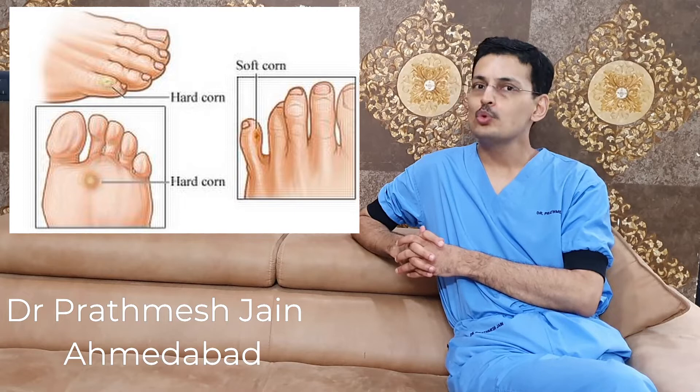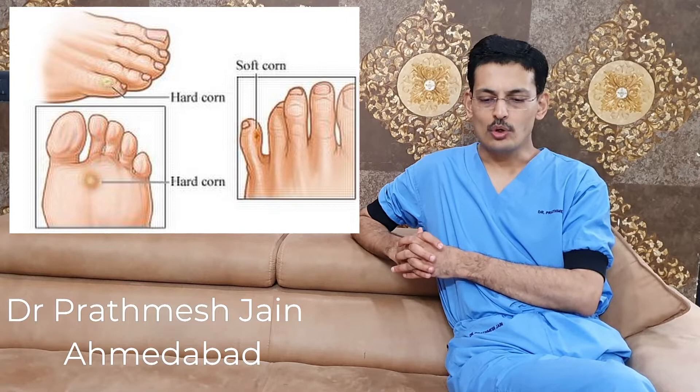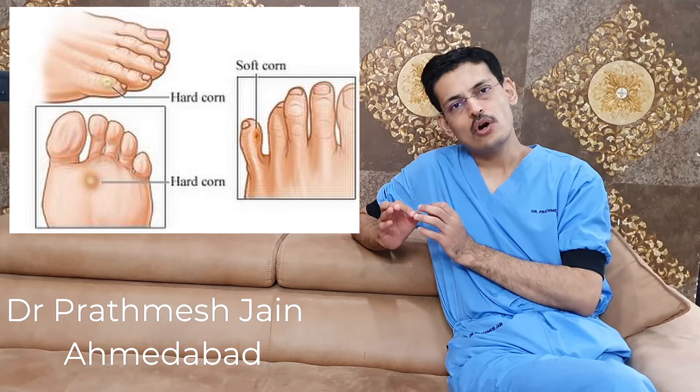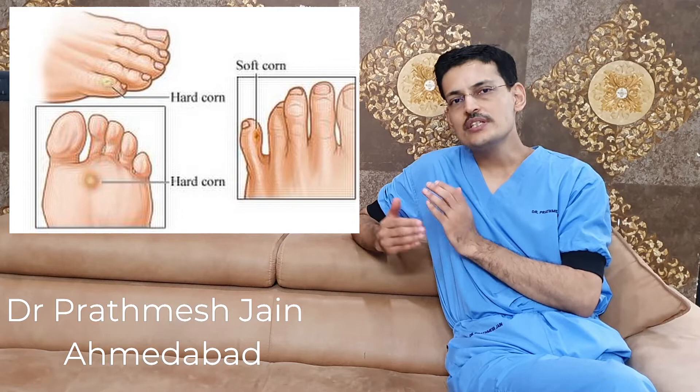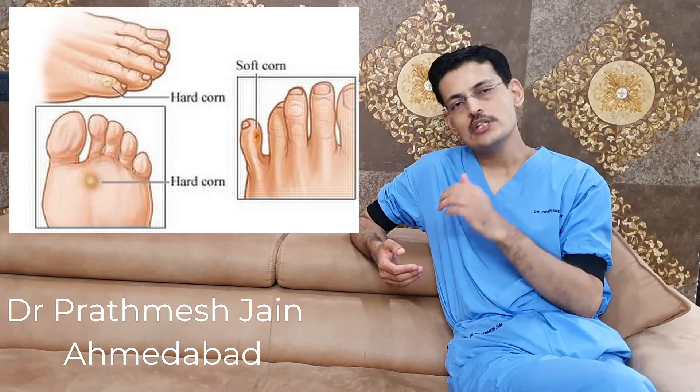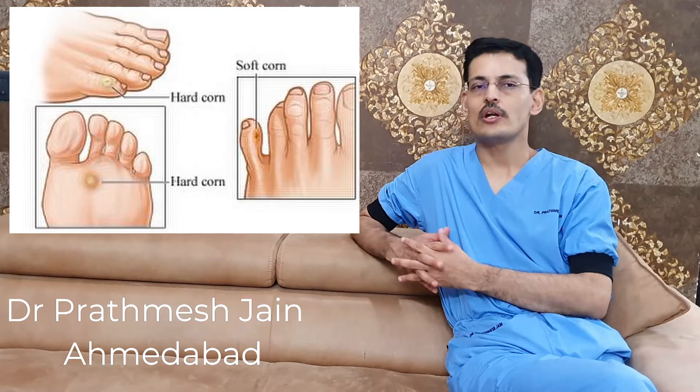Corns are usually of two types. The first, which is more common, is called the hard corn, also known as heloma durum. It is also called a classic corn, dry corn, or horny corn. These are usually seen on the toes or on the plantar aspect of the foot. It can also be seen on the dorsal IP joint and on digits, so it is called a digital corn.